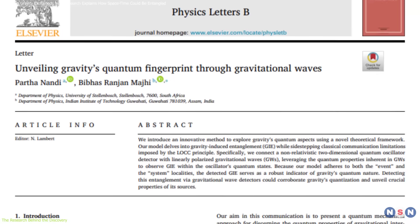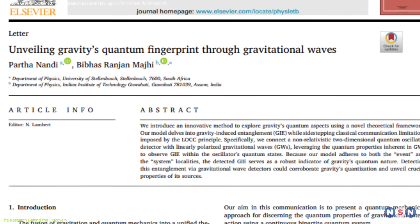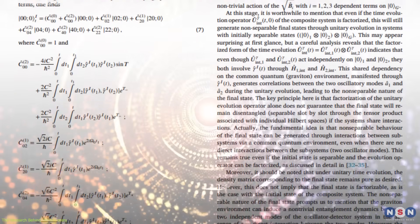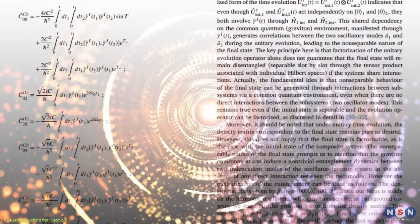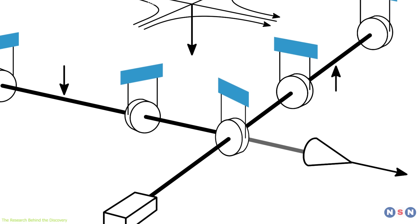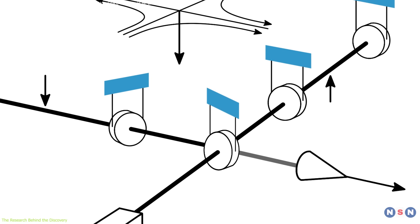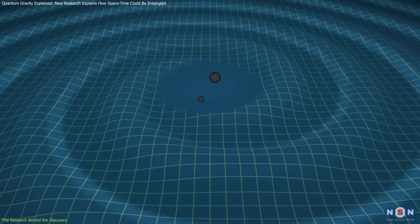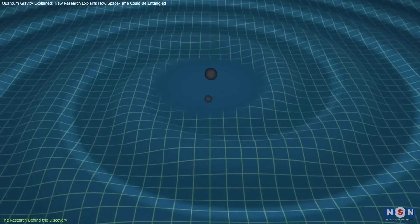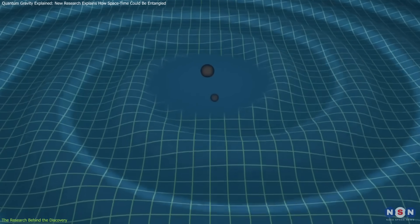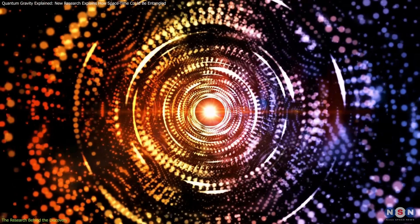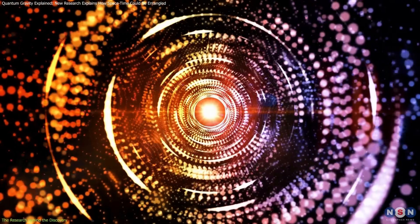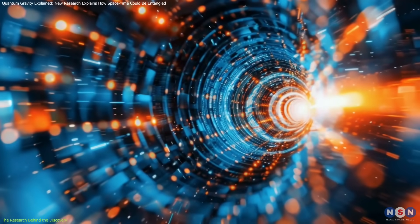To address this limitation, Dr. Nandi and Dr. Machi developed a theoretical model simulating a detector with enhanced sensitivity to quantum phenomena. In their model, the detector comprises mirrors attached to arms capable of movement and vibration. Classical gravitational waves induce specific, predictable motions in these mirrors, whereas quantum gravitational waves would affect the mirrors differently.